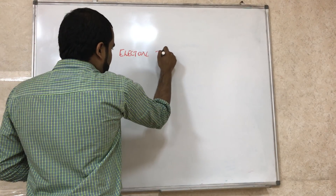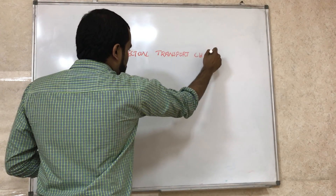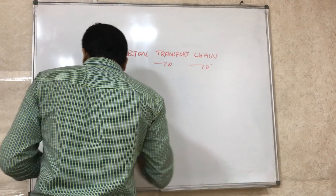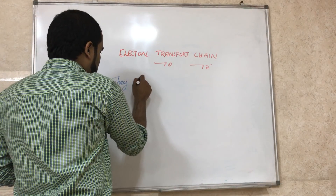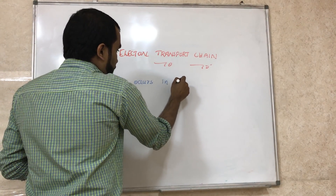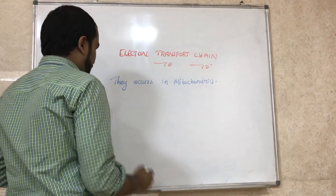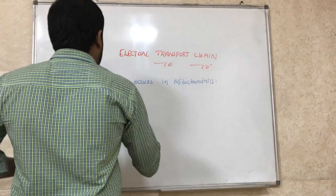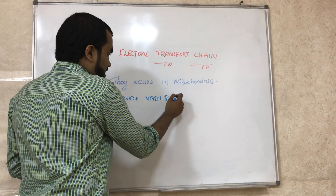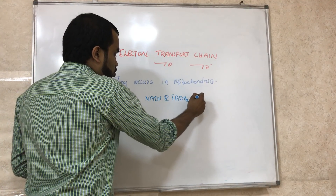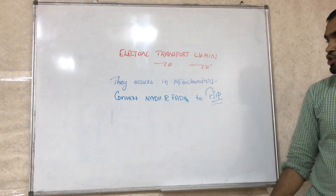ETC — electron transport chain — occurs in the mitochondria. Its function is to convert NADH and FADH2 into ATP. We will briefly see how this process takes place.